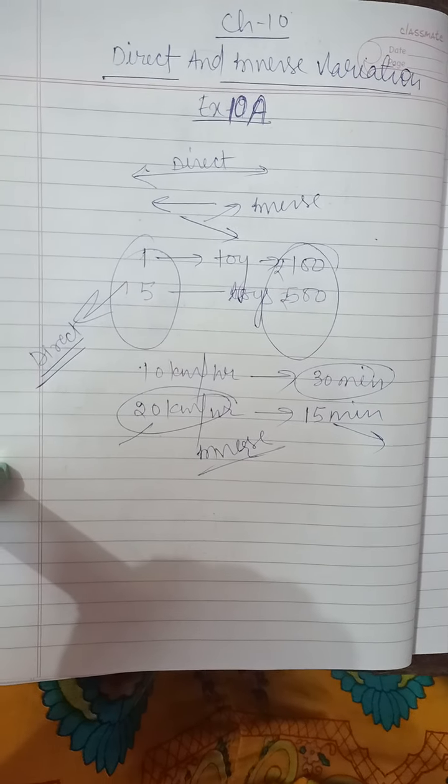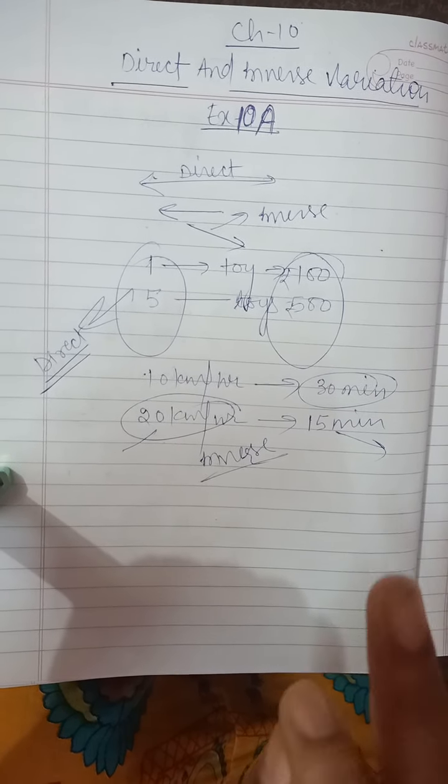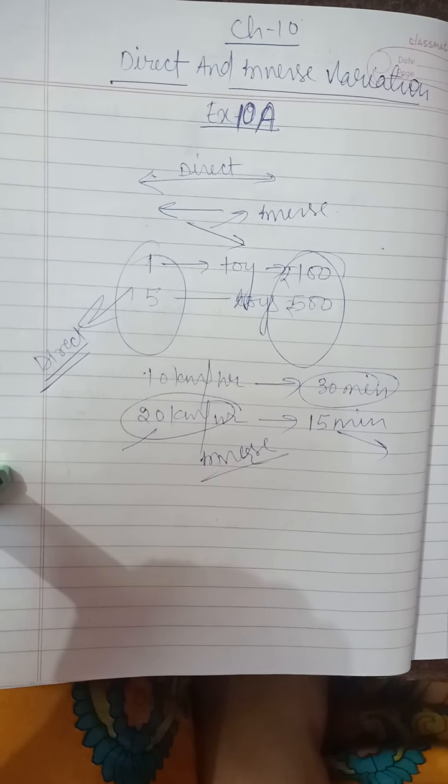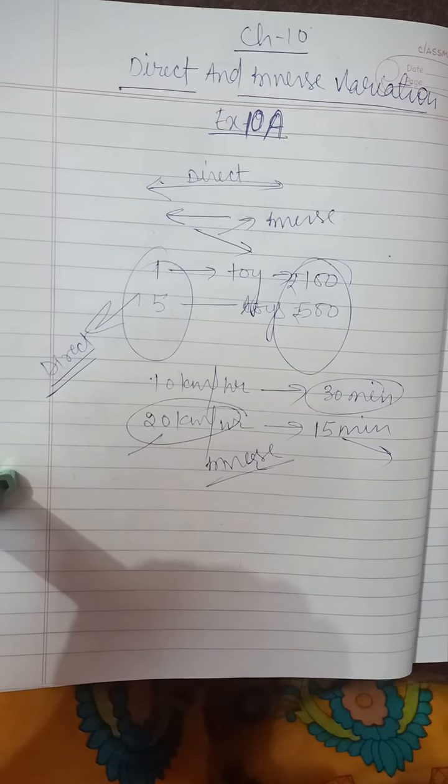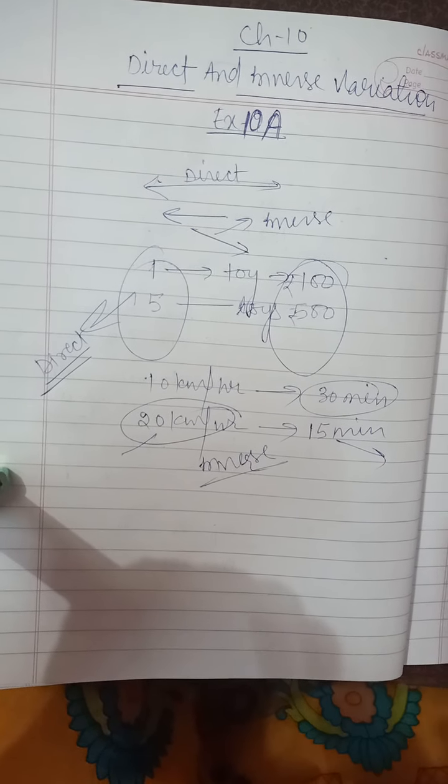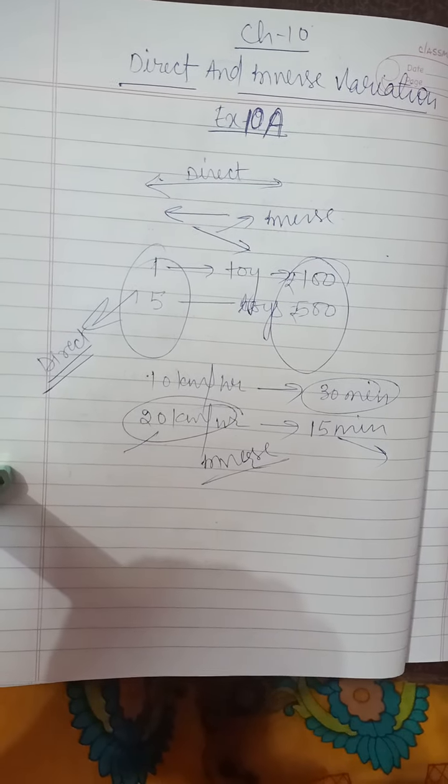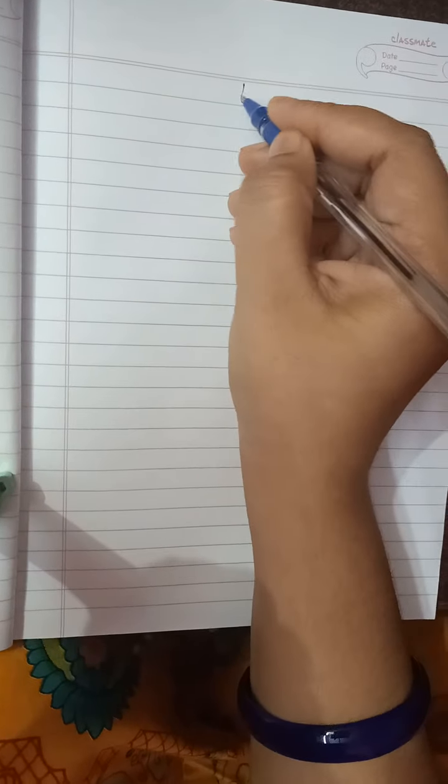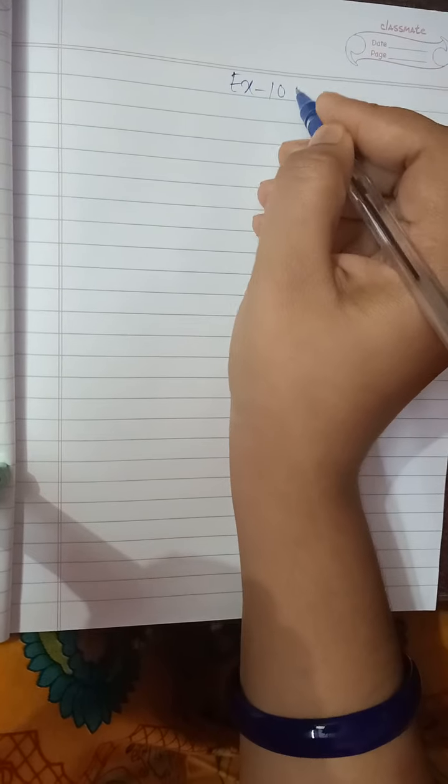You can solve this type of question by the unitary method. But here I am going to explain the easiest way, which I have already explained in ratio and proportion. Again, I am going to explain in the first exercise, 10a.